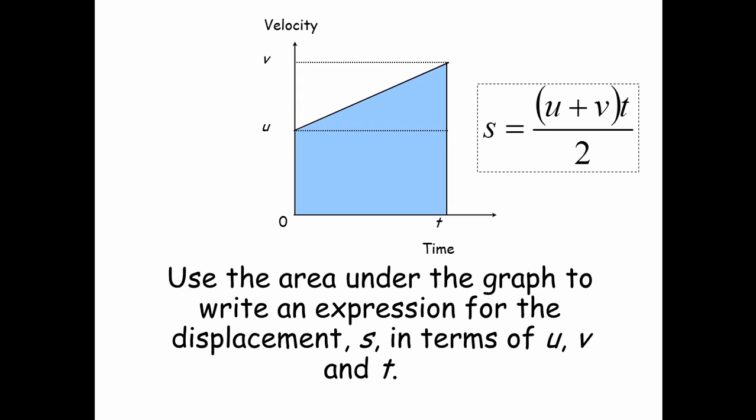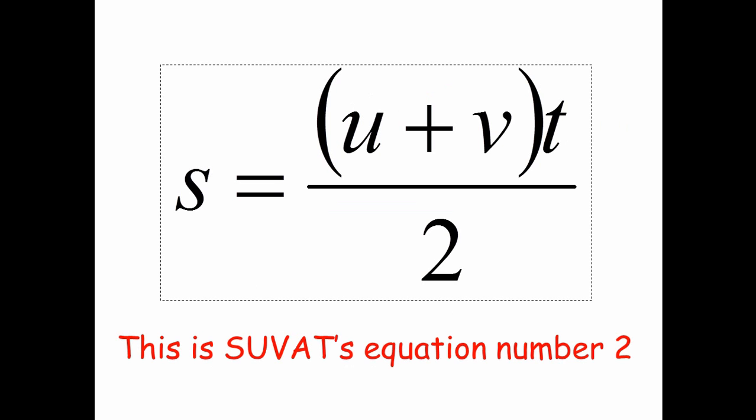And that equation is S equals, open brackets, u plus v, close brackets, T, all divided by two. So, this equation is going to be our SUVAT's equation number two.